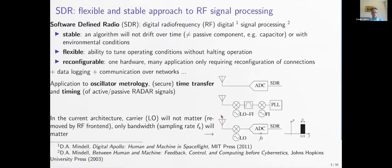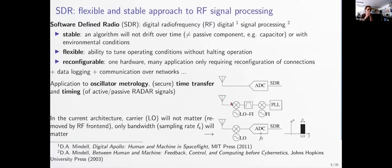The objective of software-defined radio is to remove as much analog processing as possible by feeding an analog-to-digital converter with a raw radio frequency signal and performing all signal processing in the digital domain, implemented as algorithms on a processing system. This is in strong contrast with the current analog implementation of most radio frequency signal processing chains.